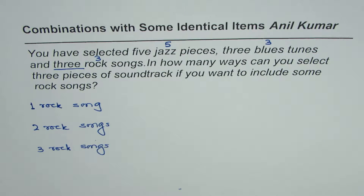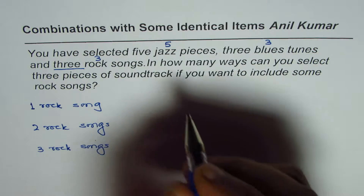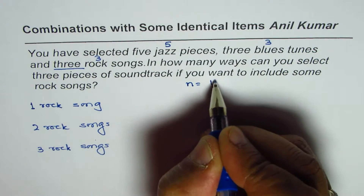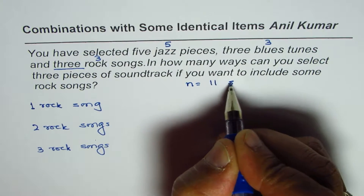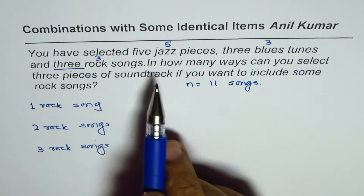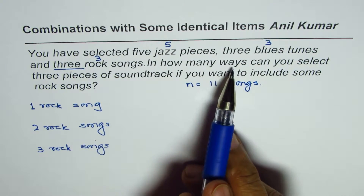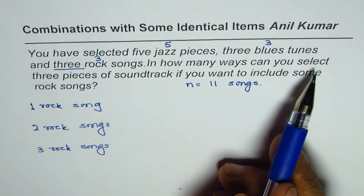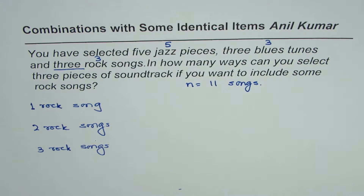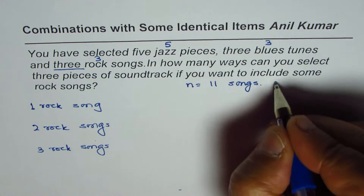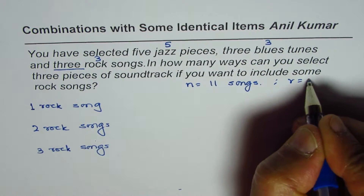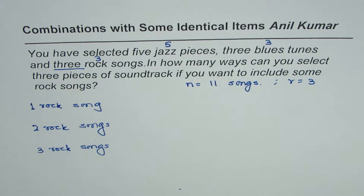We have eleven songs altogether, so n in our case is eleven songs. We have to select only three, so r is three for us.